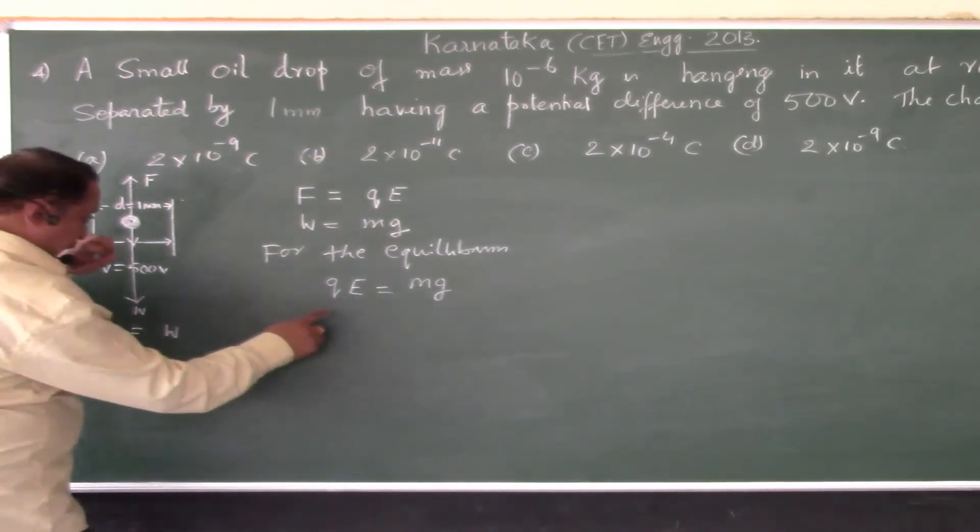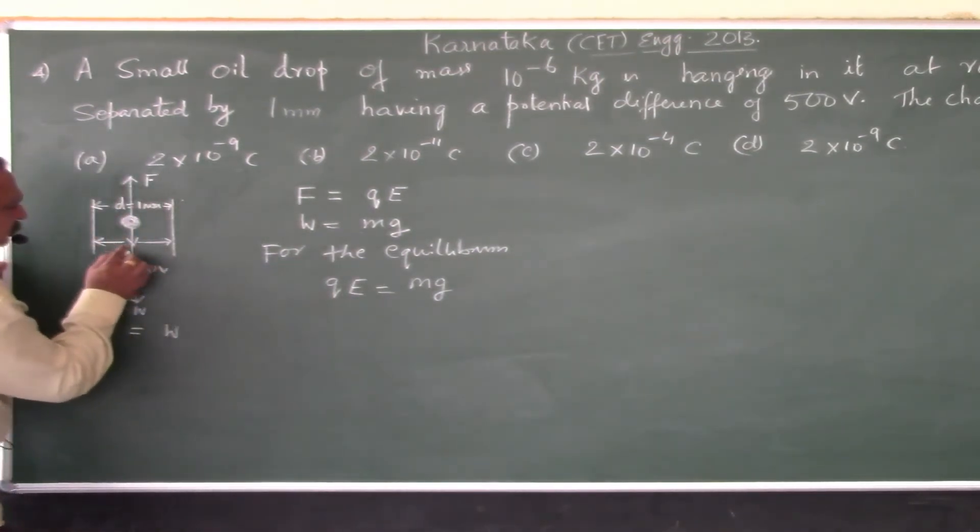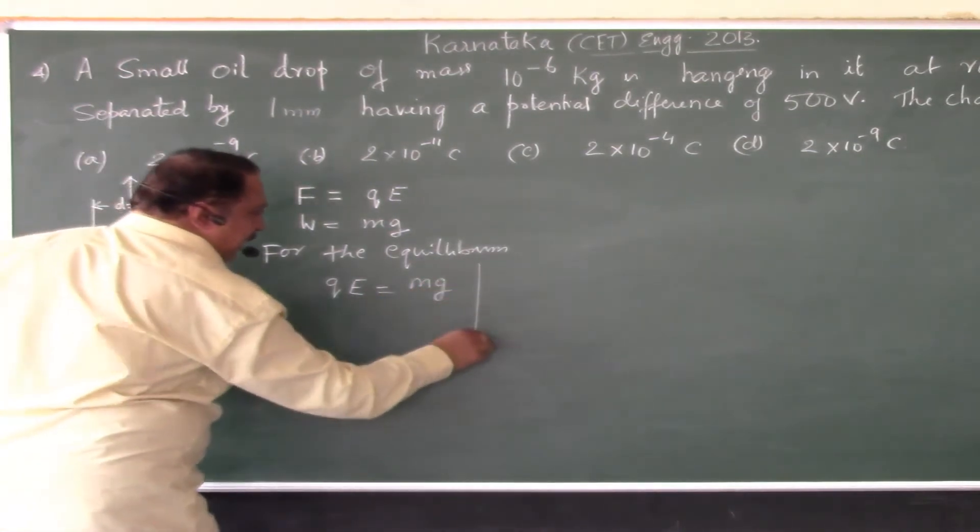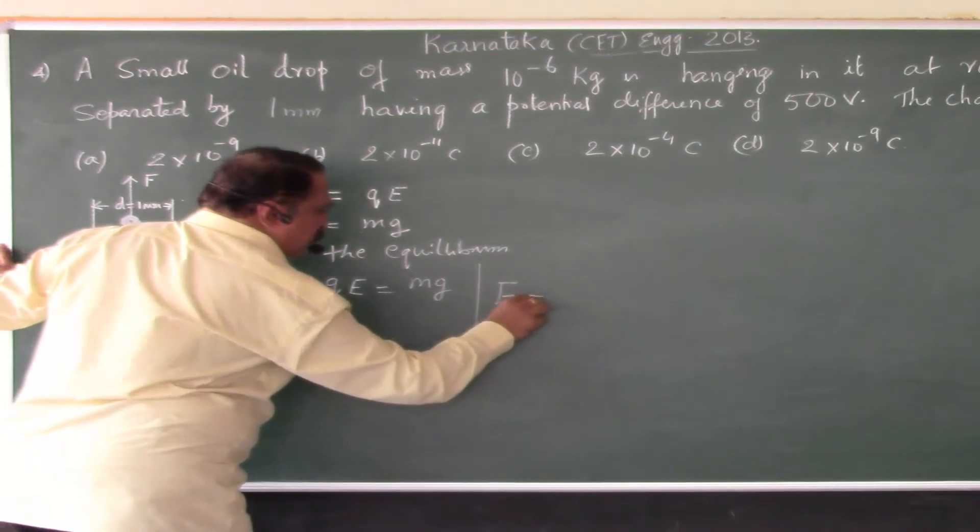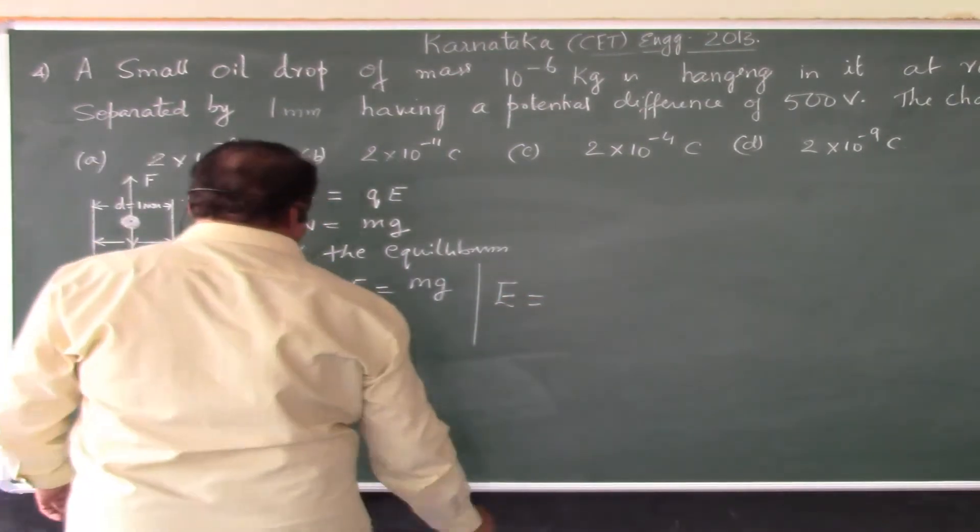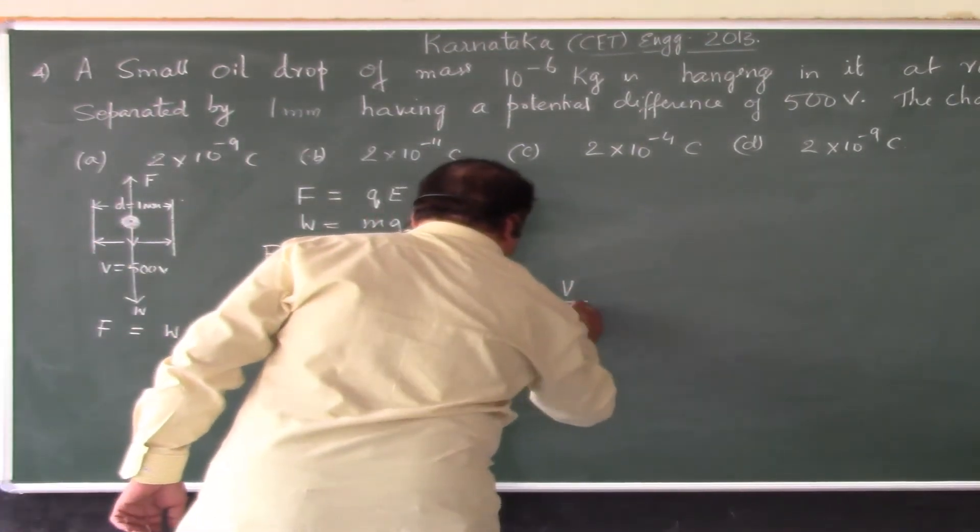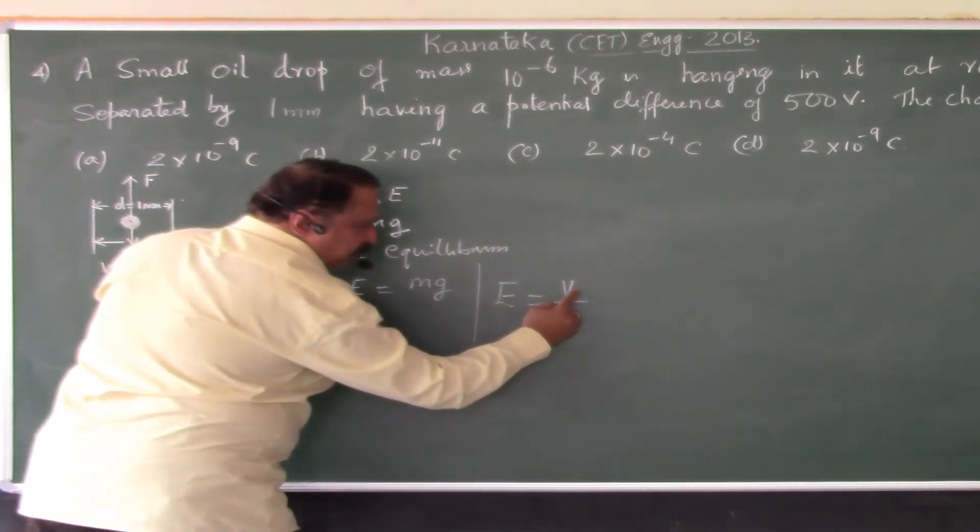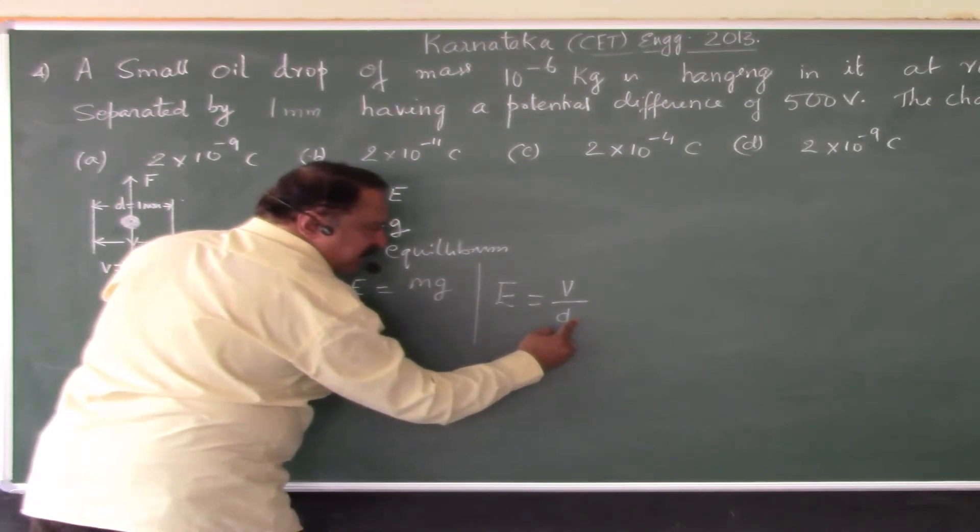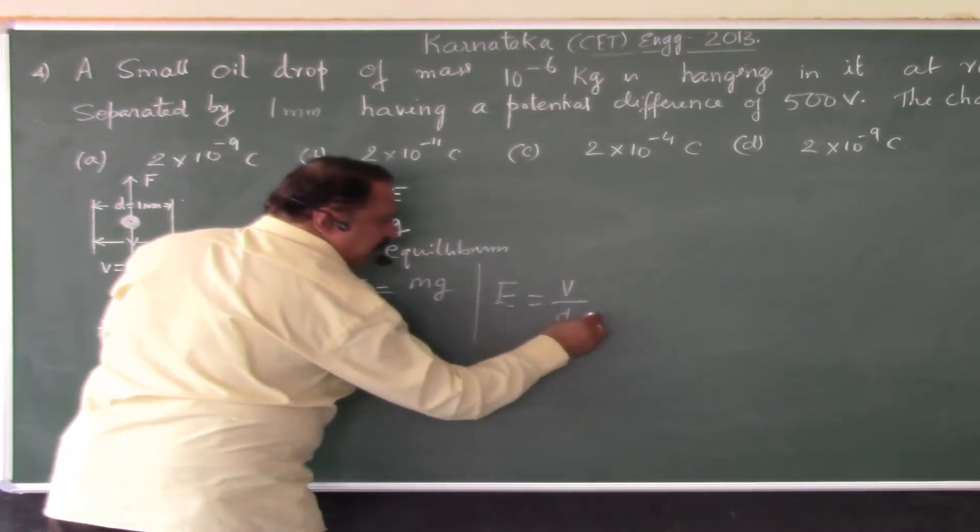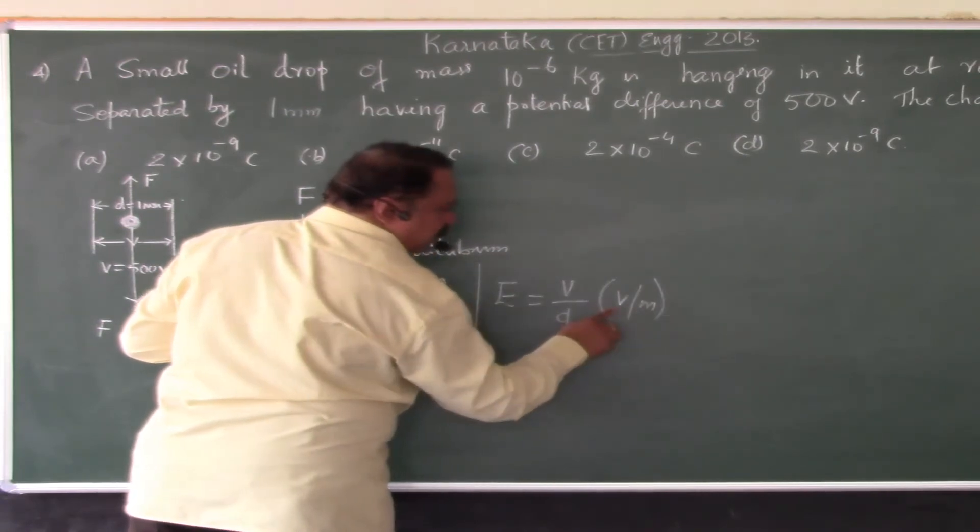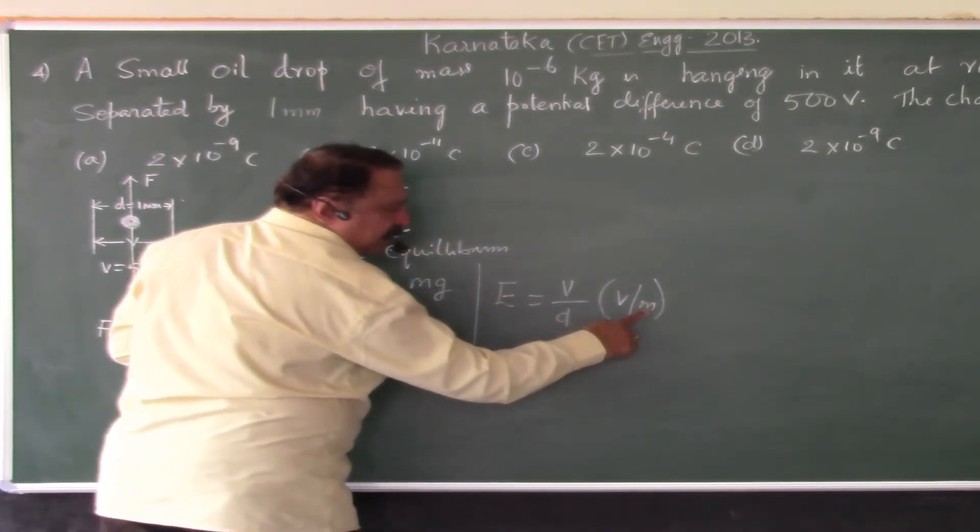Here we have been given voltage and the distance between the plates. This clearly indicates that we can always use E is equal to V by D. Electric field E is nothing but potential divided by the distance between the plates, because the unit of electric intensity is volts per meter. Volt is potential V, m is distance in meter.